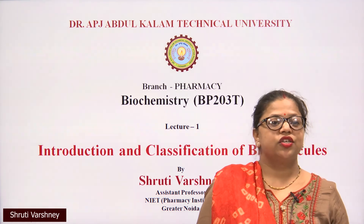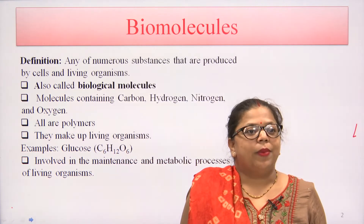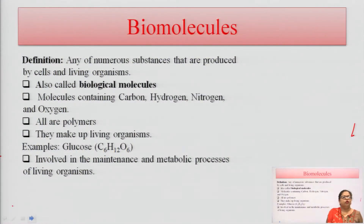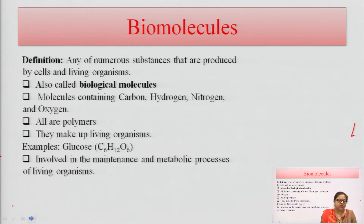This topic is the introduction and classification of biomolecules. Biomolecules are numerous molecules produced by cells and living organisms; they are called biological molecules. They are molecules containing carbon, hydrogen, nitrogen, and oxygen. Basically, these are all polymers, meaning they contain monomers in their structure and are made up in the living organism.